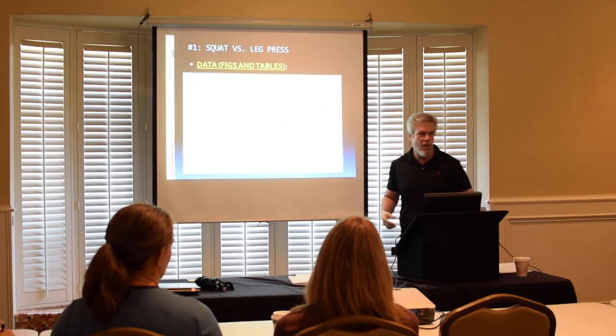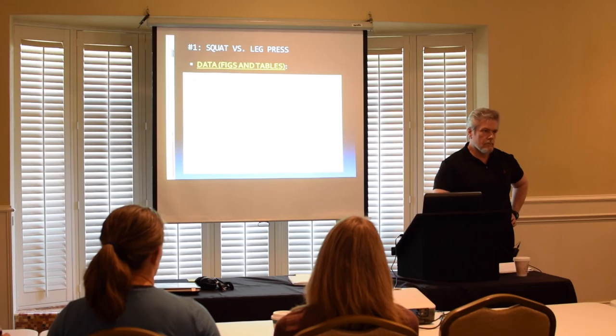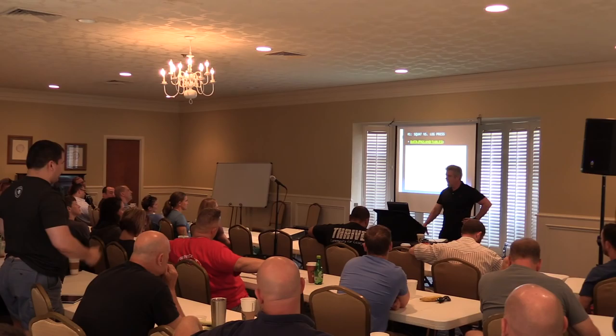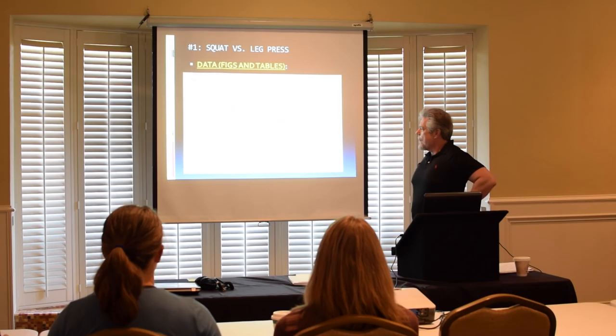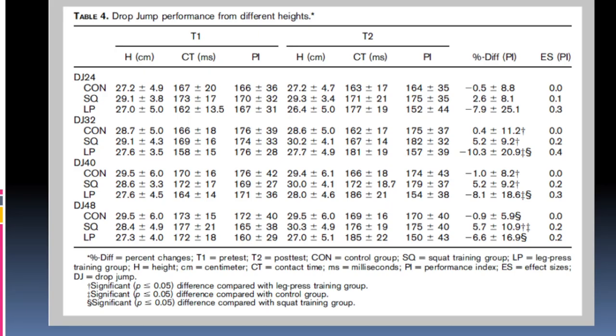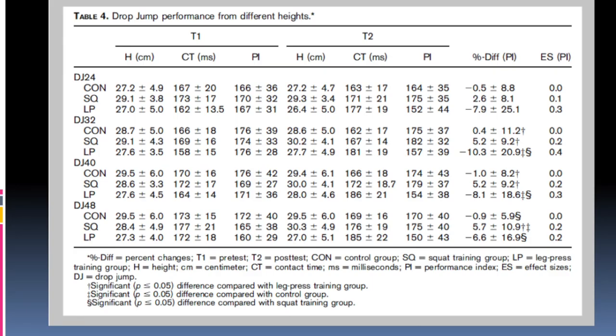Looking at the details of the actual numbers, what I find interesting is the leg press — the height they were jumping didn't change, it got slower with training. Whereas the squat group jumped higher and got faster. Again, if we can believe it, because when we look at the spreads on all of this data and when we look at the effect sizes, I for one am not particularly impressed. Can you kind of sell it that the squat was a little bit better for the drop jump? Yeah, sort of.